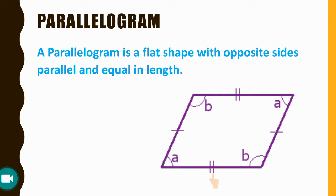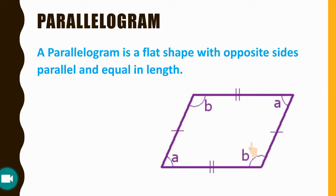These two parallel lines and these two parallel lines indicate that these two lines are parallel and equal in length, or parallel to each other. Similarly, this one line and this one line indicate that these two lines are also parallel to each other.